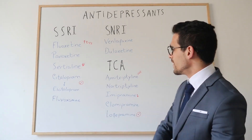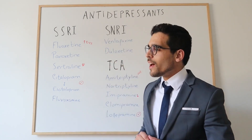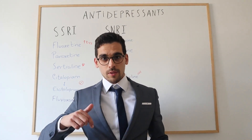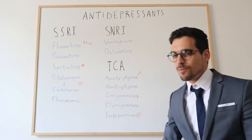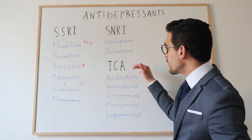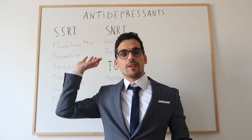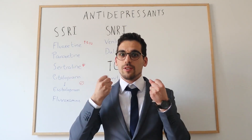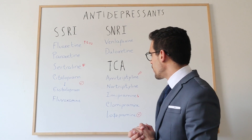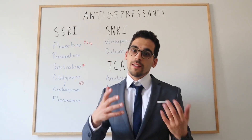The next class is the TCAs — tricyclic antidepressants. As we covered in the last video, TCAs not only inhibit the reuptake of serotonin and noradrenaline, increasing those two neurotransmitters, but they also interact with other receptors and channels in the body. They antagonize acetylcholine receptors and histamine receptors.